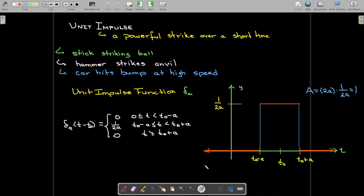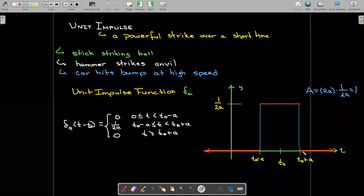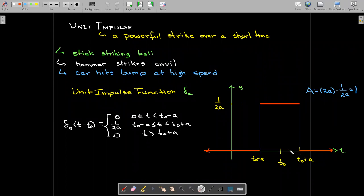We're going to start by looking at this function. We're going to call it delta sub a. A is the length, well, half the length of the strike. The strike goes from a specified t-naught minus a to a specified t-naught plus a. So the length of the strike, or the time that the strike takes place, is actually 2a. And the height then, or the force that's applied, is going to be 1 over 2a. And we call it a unit impulse. Unit implies 1, because the area under the curve equals 1.